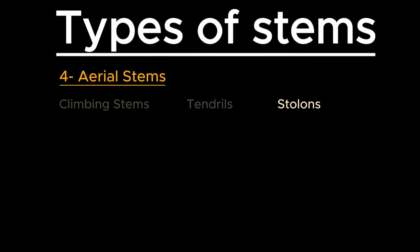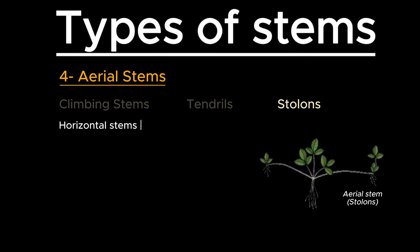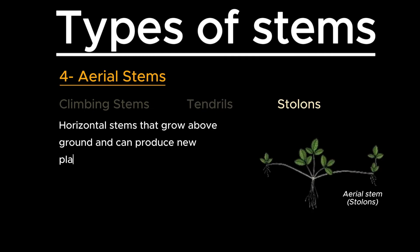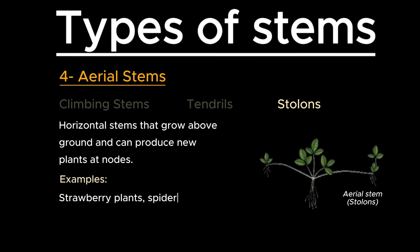Stolons, or runners, are horizontal stems that grow above ground and can produce new plants at nodes. For example, strawberry plants and spider plants.